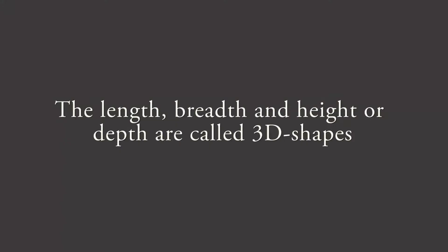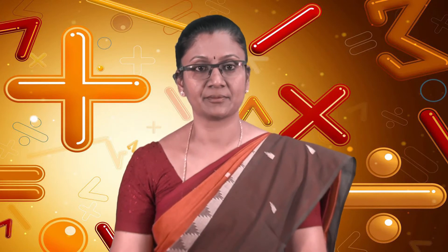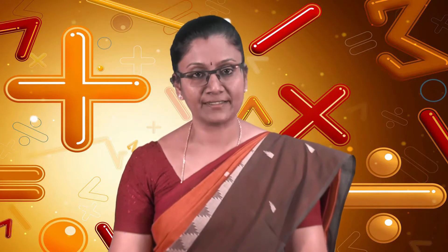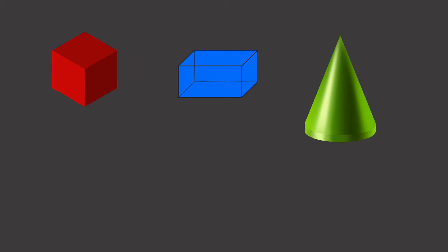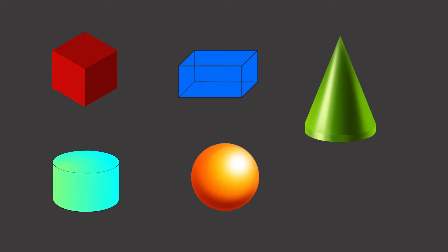Solid objects having three measures like the length, breadth and height or depth are called 3D shapes. They also occupy space. For example, a cube, a cuboid, a cone, a cylinder or a sphere.